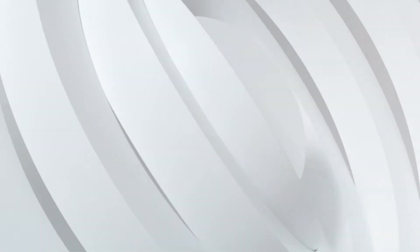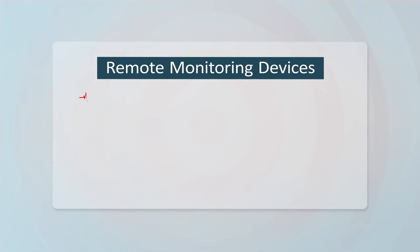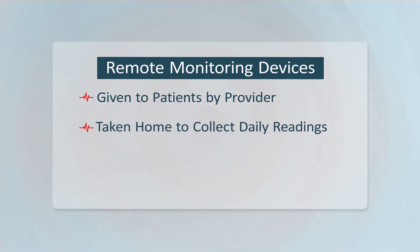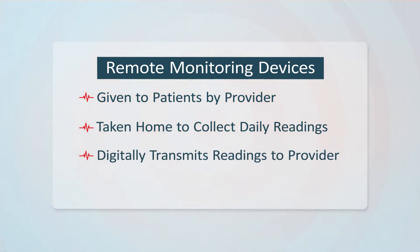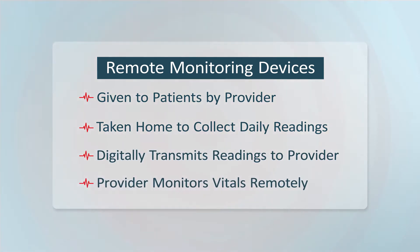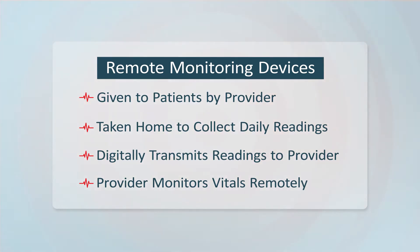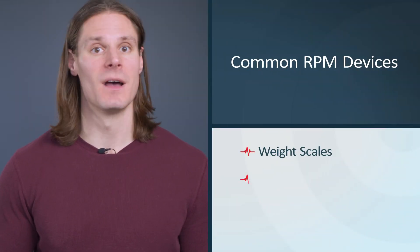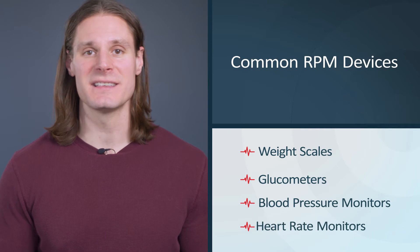Before we jump into the codes themselves, let's talk a little bit more about remote patient monitoring devices. An RPM device is defined as a device given to the patient by a provider and/or taken home by the patient to take readings daily. These devices transmit data electronically so that the provider can make any interventions and ensure the patient's vitals are within the expected range. These devices can include, but aren't limited to, weight scales, glucometers, and blood pressure cuffs.